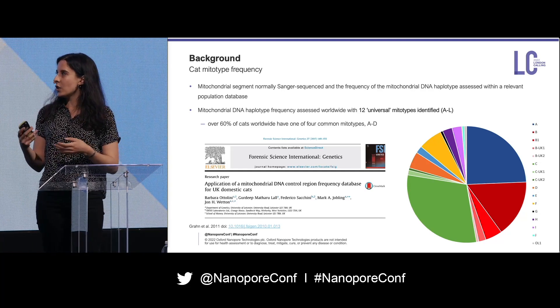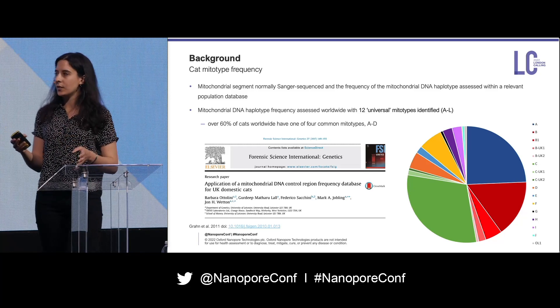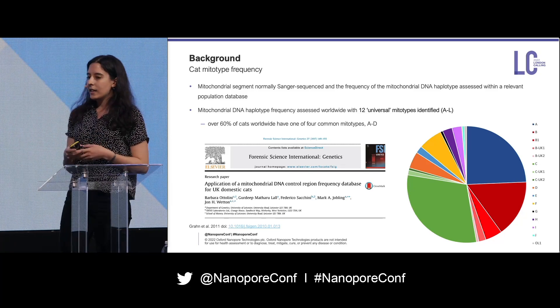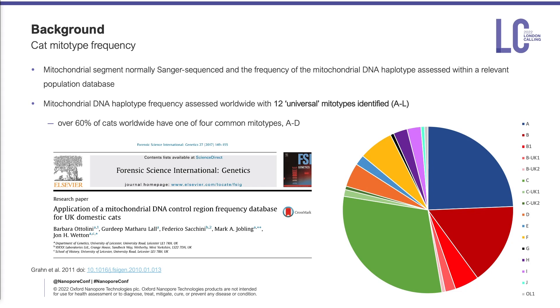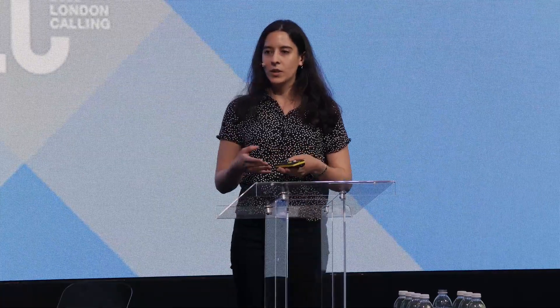In the pie chart you can see the frequencies of the different profiles. In the case of the cat hair recovered from the shower curtain, it matched that of the suspect's cat, and they were very lucky that it was quite a rare profile — the BUK1, which is the second smallest red slice. If it had been the A in blue or the Cs in green, then it really wouldn't have been quite so useful.